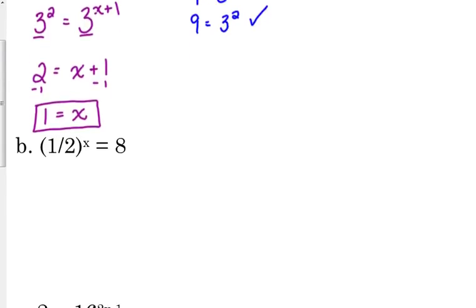Now, b, we've got to do a little bit more work with b. We've got 1 half to the x is equal to 8. When I look at this problem, what I see is I've got 2 over here and I've got 8 over here. I know 8 is a power of 2. But it's not just 2 on the left side. I've got 1 half. Well, we can write 1 half as 2 to the negative 1. 2 to the negative 1 is the same as 1 half. And 8, we can write as 2 cubed.